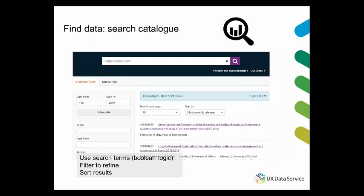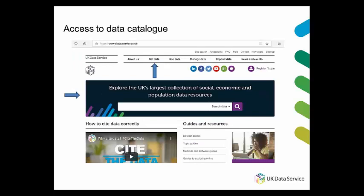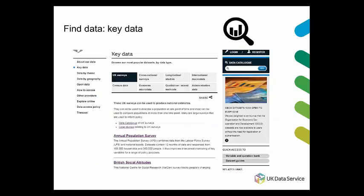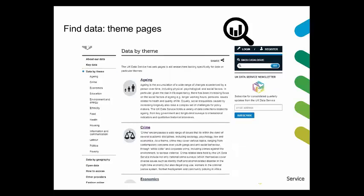How do we find data? There is a searchable data catalogue — you just pick search terms, a bit like Google, and then there are ways to refine and sort your search. You can access the catalogue from the home page and also under the 'Get Data' section of our website. Under 'Get Data' we also have lists of key datasets by data type, called 'Key Data', and there are also theme pages that link to a variety of collections and resources for key topics.